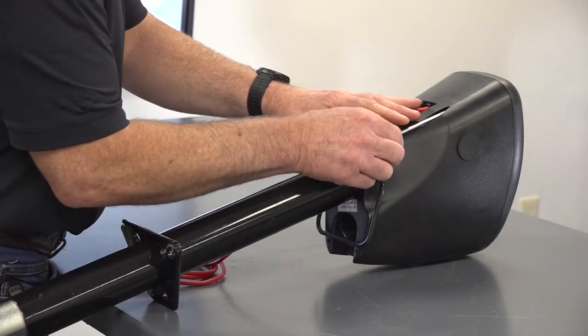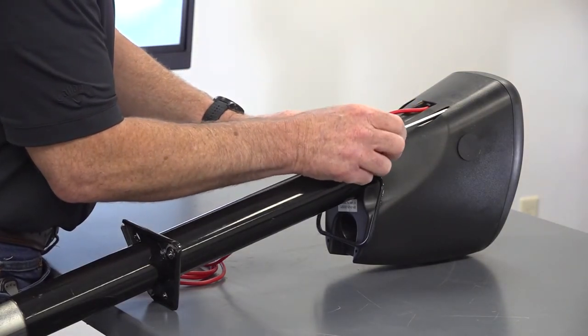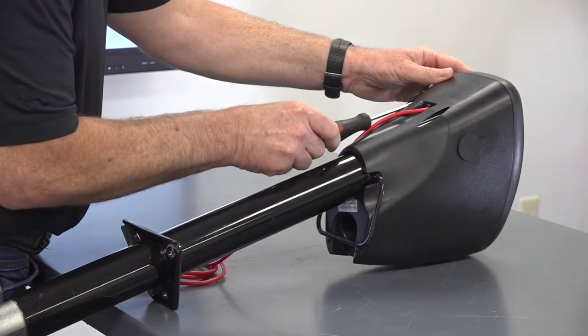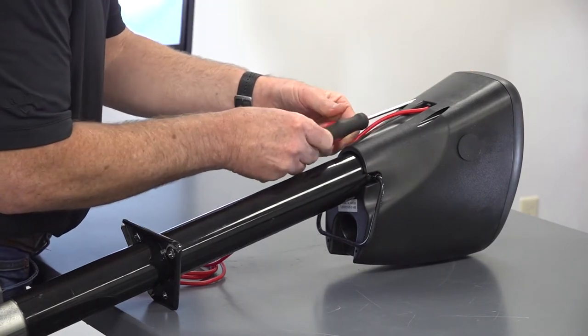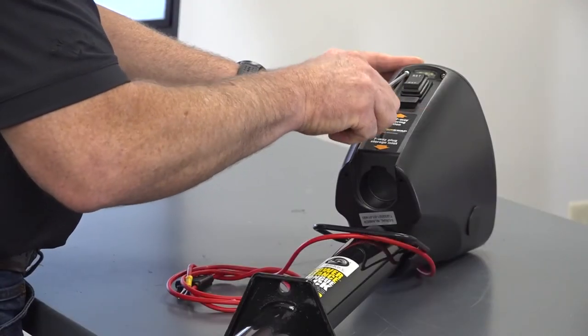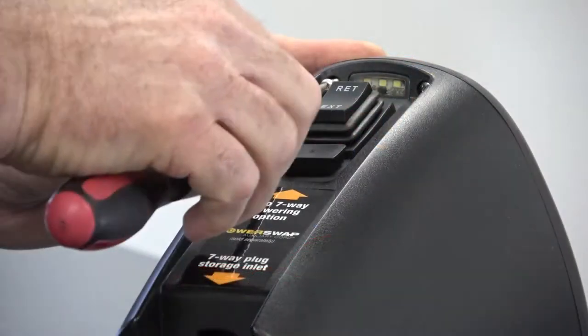Using a Phillips head screwdriver, remove the two retaining screws from the rear of the PowerStance tongue jack's head cover assembly. Remove the two Phillips head screws retaining the bezel to the head cover.